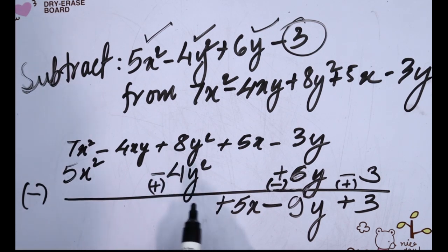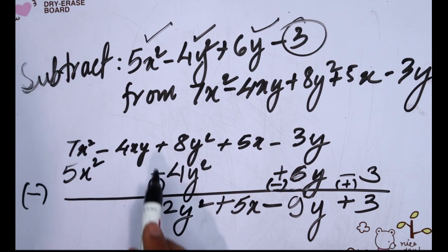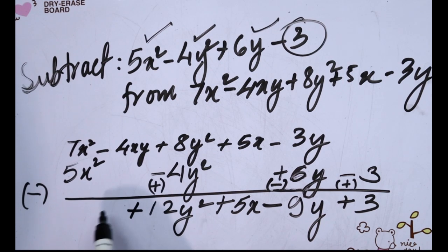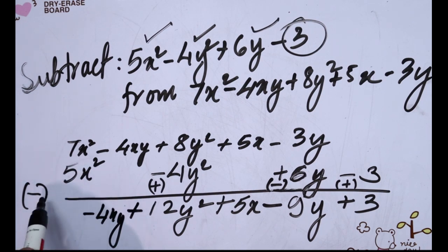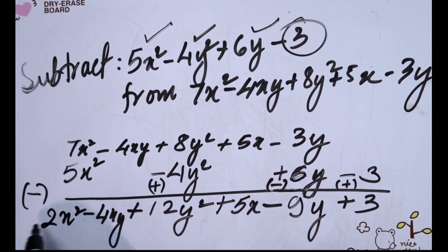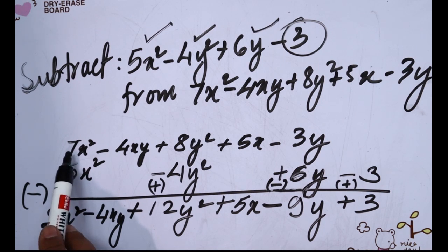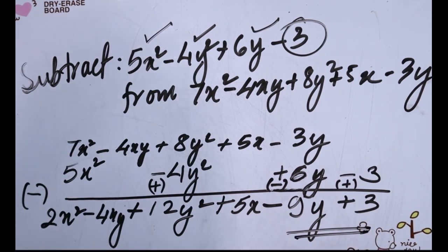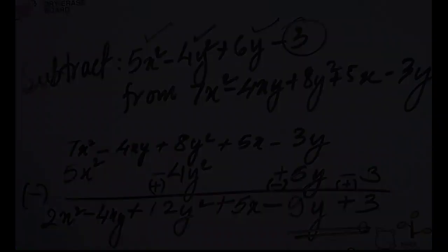8, 4, 2, 12y squared. Sign changed - plus 5, 8 plus. Minus 4xy. Sign changed 7. 5, sign changed 7.